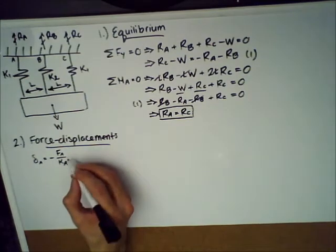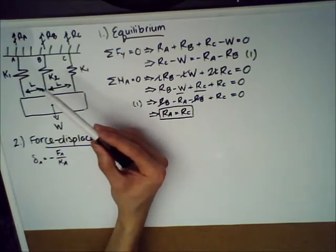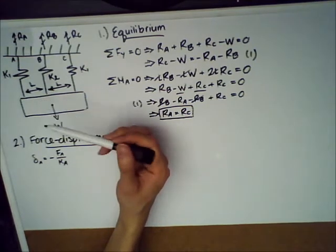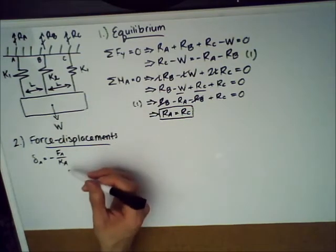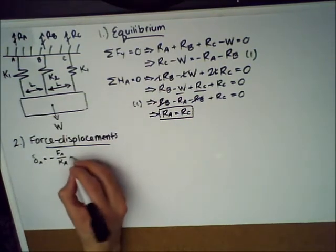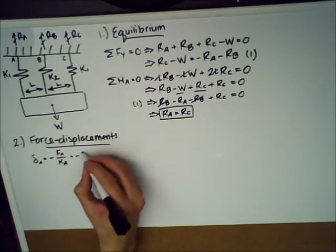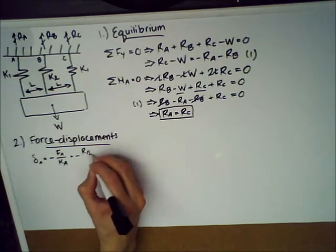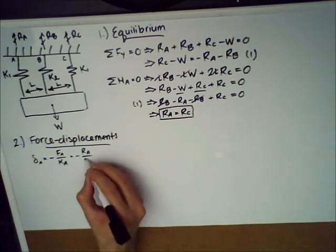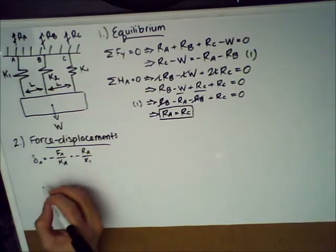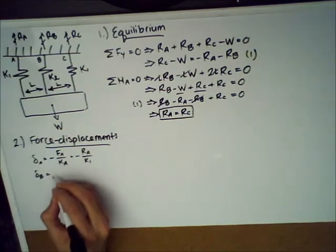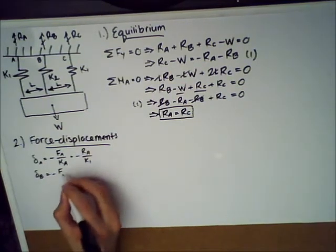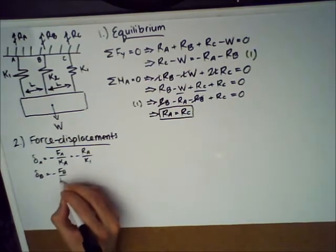The amount of distance that the first spring displaces, let's call this displacement delta A, is equal to negative F A over K A. And this is just from Hooke's Law. So we know that the force is restorative for a spring and it's equal to and proportional to the displacement by some constant. So if I just rearrange this, you have Hooke's Law for a spring. So here we know that F A is simply R A, because that's the force that's acting on the first spring. And K A is just K one. So this is equal to negative R A over K1.